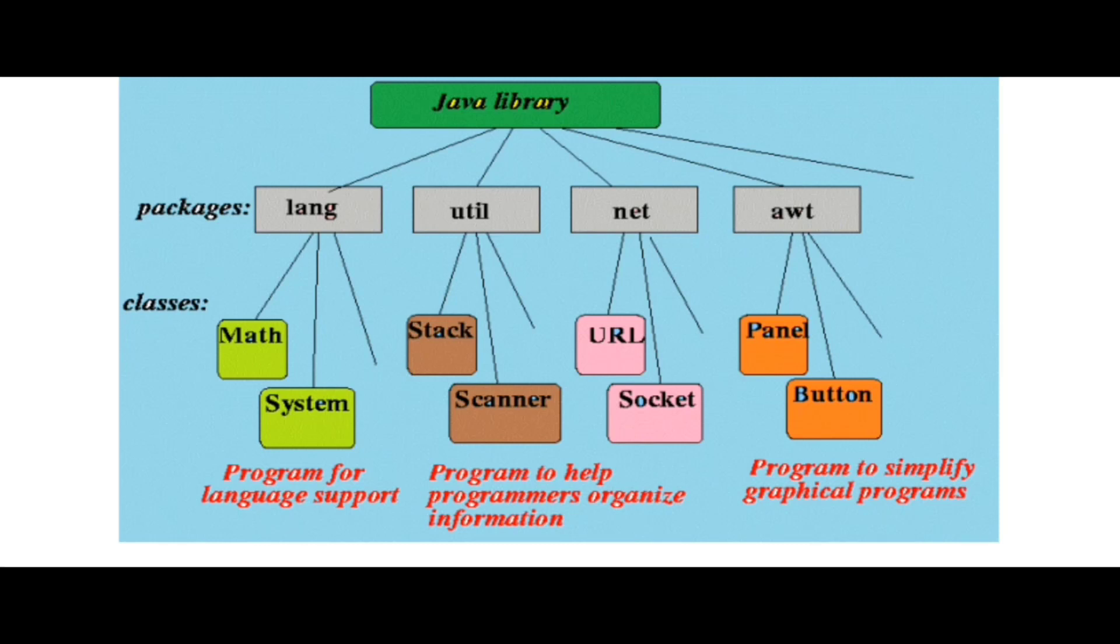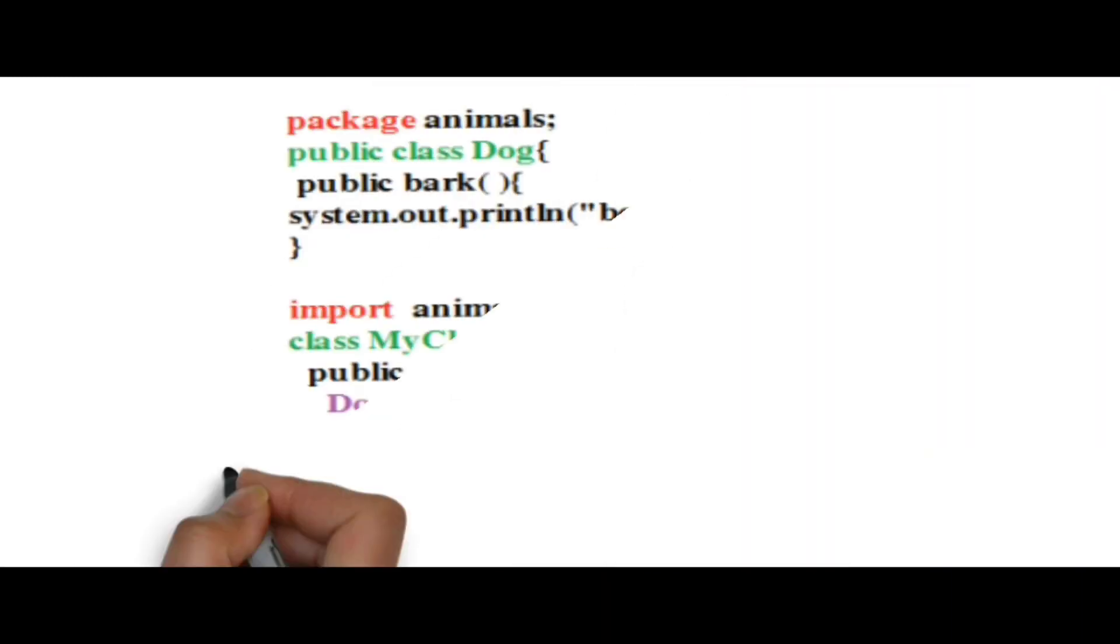This is the flowchart of packages and their types. For example, language package is used for supporting languages in Java. AWT package is used to simplify graphical programs, and so on.